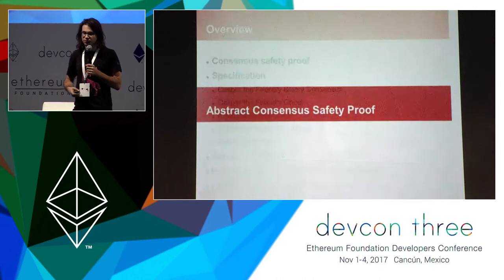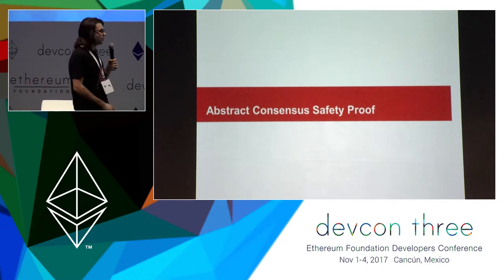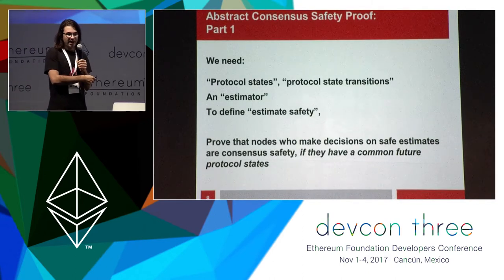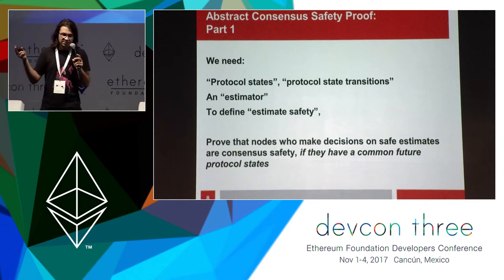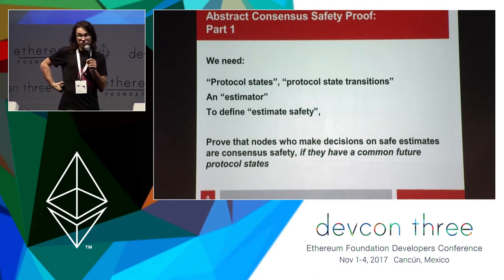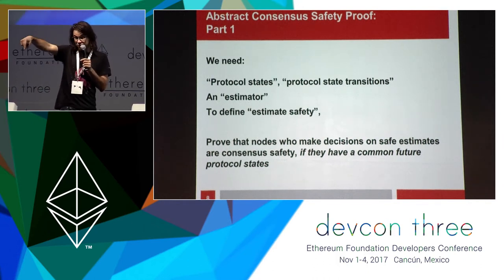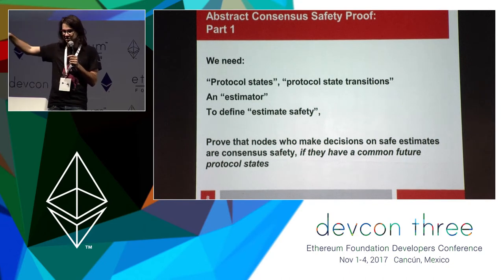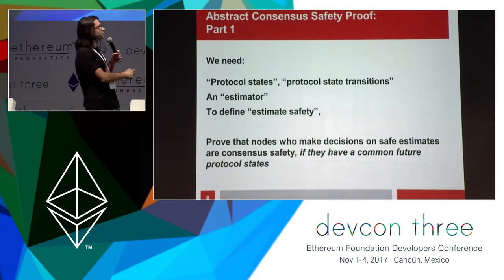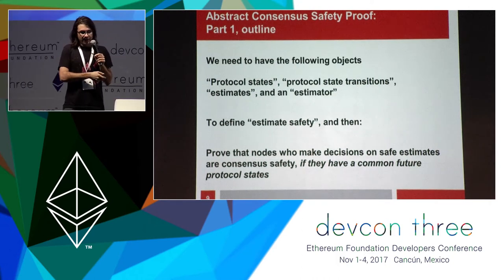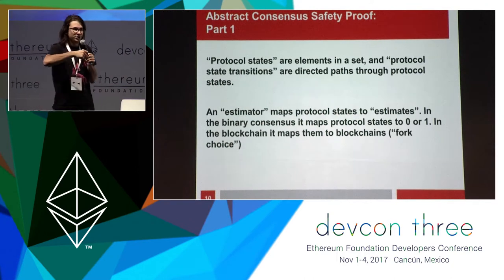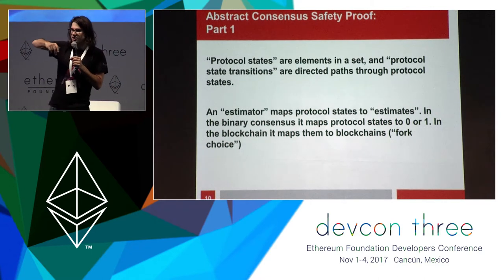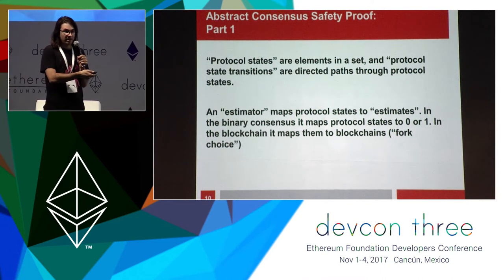The consensus safety proof is probably the most important thing to understand in order to grok this whole process. We need a few things: protocol states, state transitions, an estimator, and something called estimate safety. The key theorem is that if nodes have a common future state in the protocol, then they have consensus safety on decisions that have estimate safety. Protocol states are just things in a group; state transitions are paths between them. An estimator takes protocol states and maps them to — in binary consensus — a zero or one, and in blockchain consensus — a whole blockchain. It's our fork choice rule mechanic.